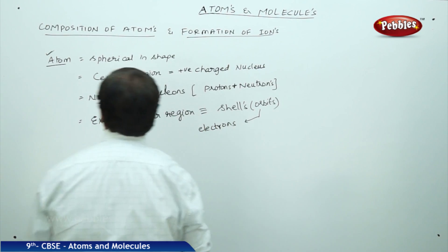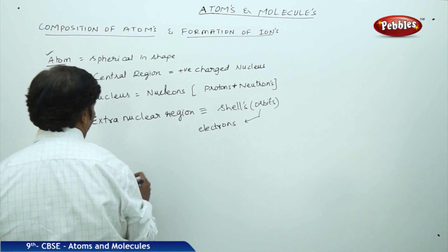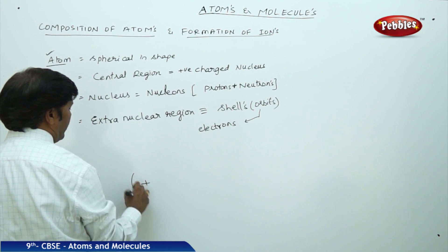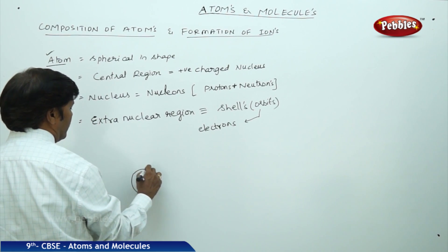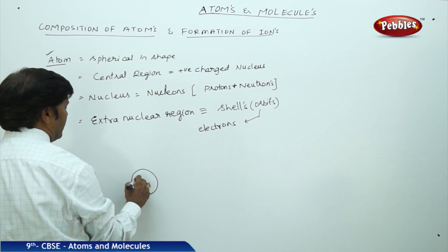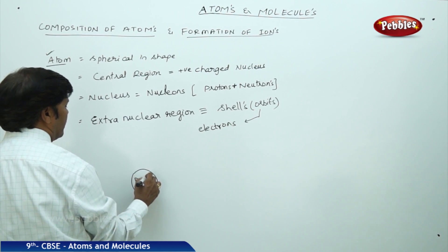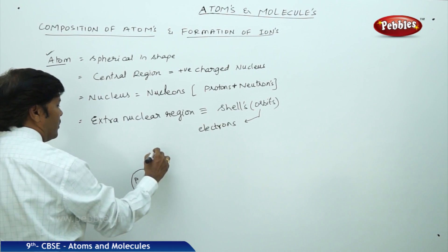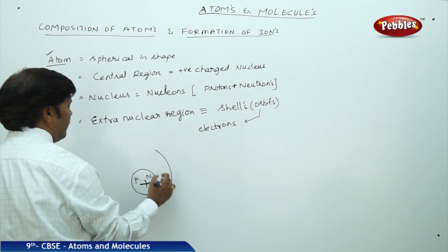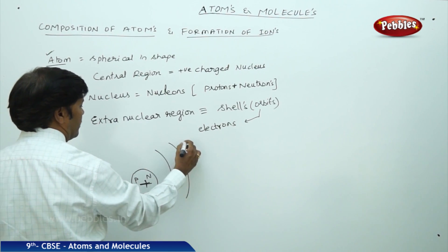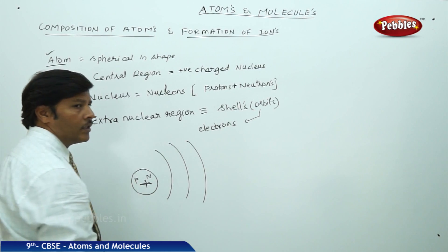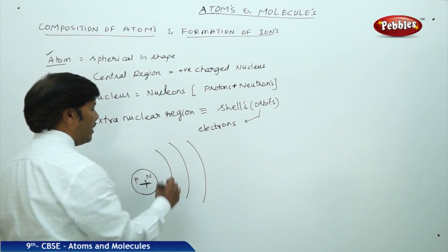If I draw a small diagram, this is the positively charged nucleus and it contains protons and neutrons. Outside we have the shells, and in the shells we have electrons.